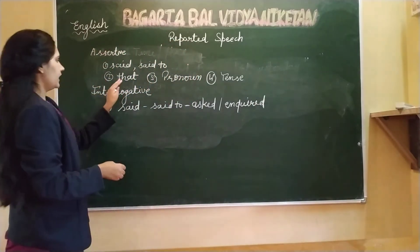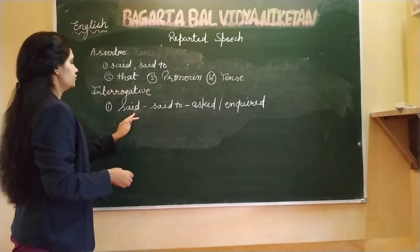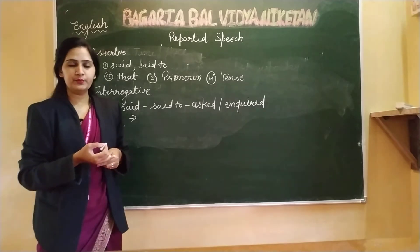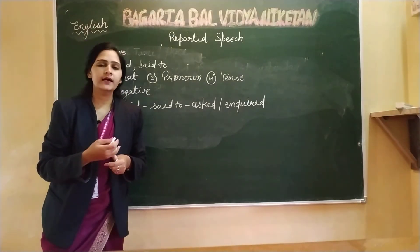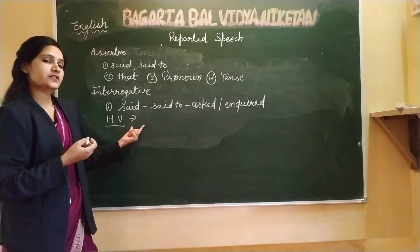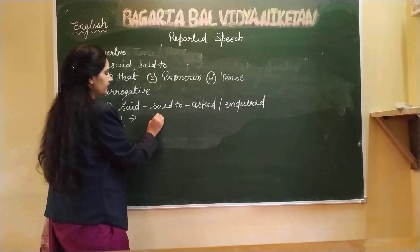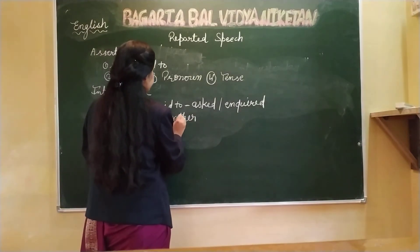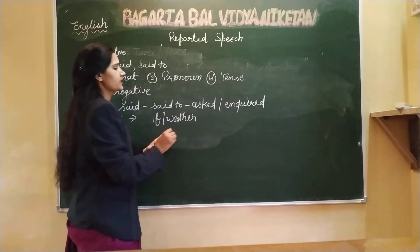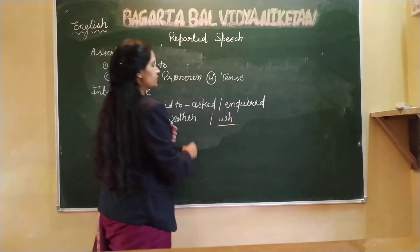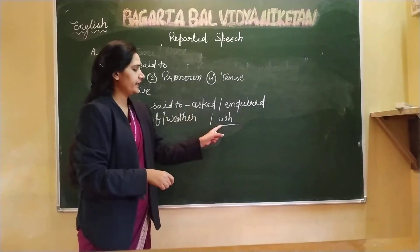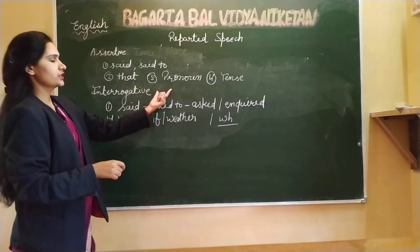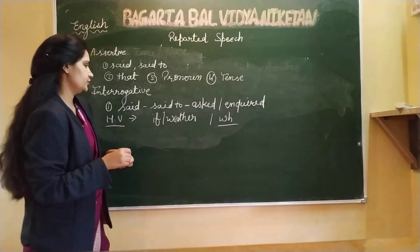The second rule: for helping-verb interrogative sentences — where 'is', 'are', 'was', 'has', 'have', 'will', 'shall' are used — you use 'if' or 'whether' as a conjunction. However, for WH-word sentences, no separate conjunction is used. The WH-word itself is written as-is. Third, pronoun is changed, and fourth, tenses are changed according to the rules.